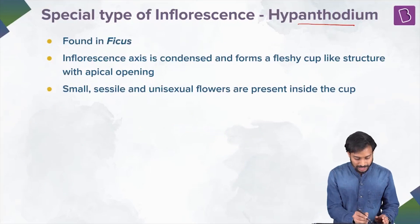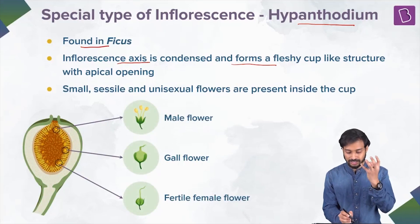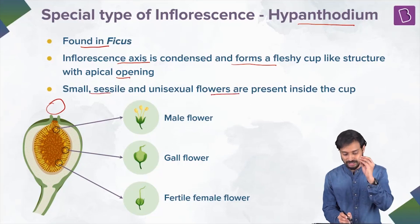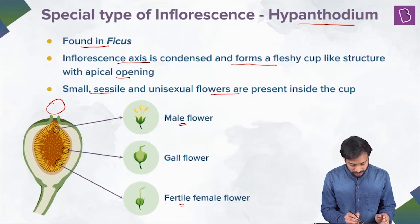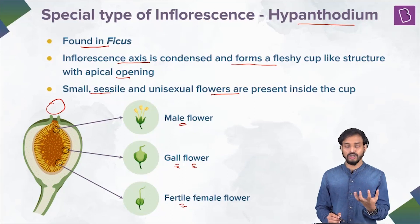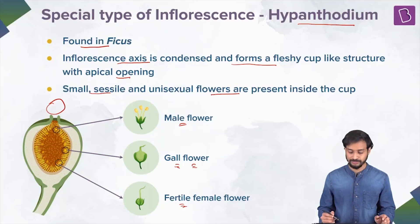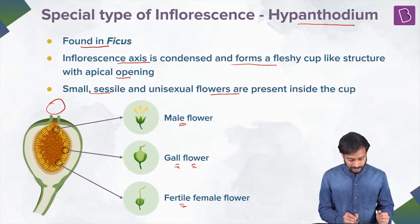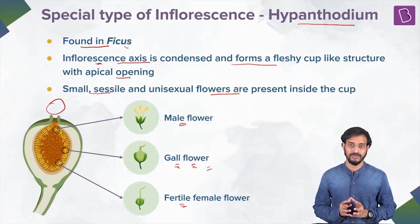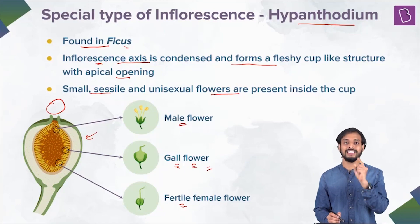Hypanthodium is found in Ficus. Here the inflorescence axis is condensed and forms a fleshy cup-like structure with an apical opening. Small sessile unisexual flowers — male flowers, fertile female flowers, and gall flowers — are present inside the cup. A gall flower has a short style and later becomes part of the pulpy tissue of the plant.